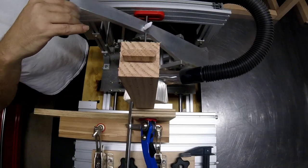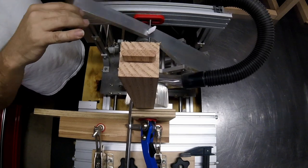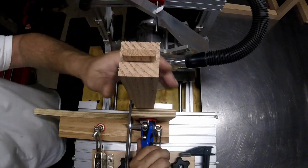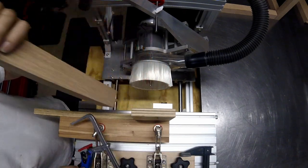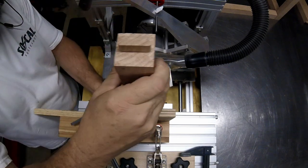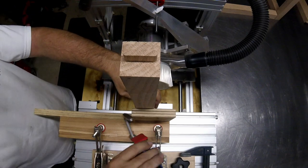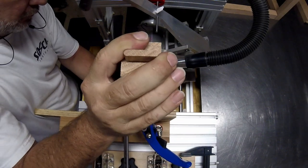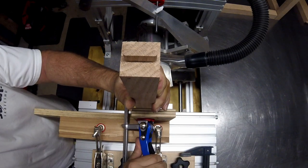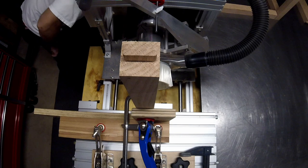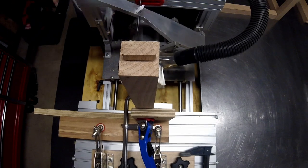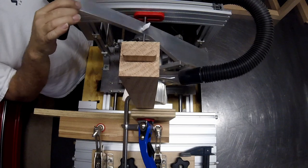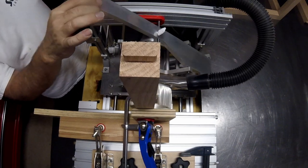And this is a different setup. I'm cutting mortises for the center shelf into the end piece. I'm just making sure that the stock is square to the table, because the tenon is hanging off the front.